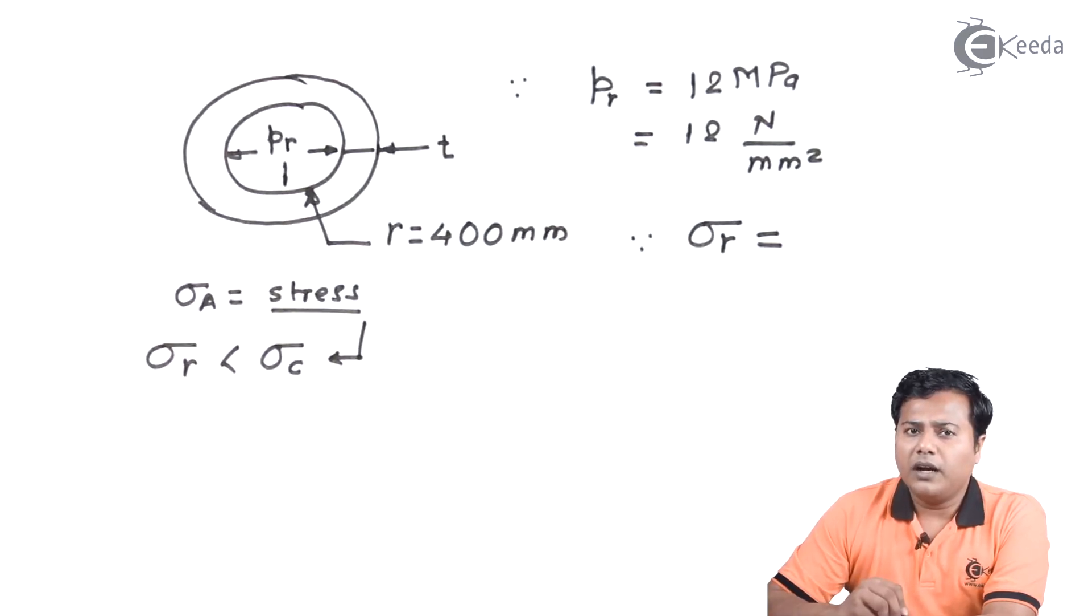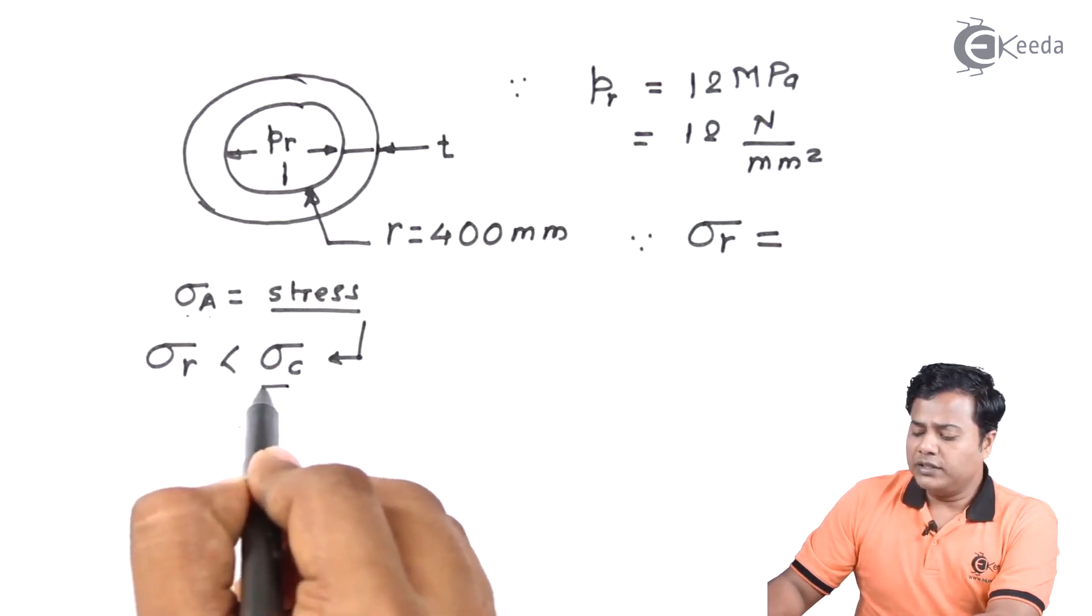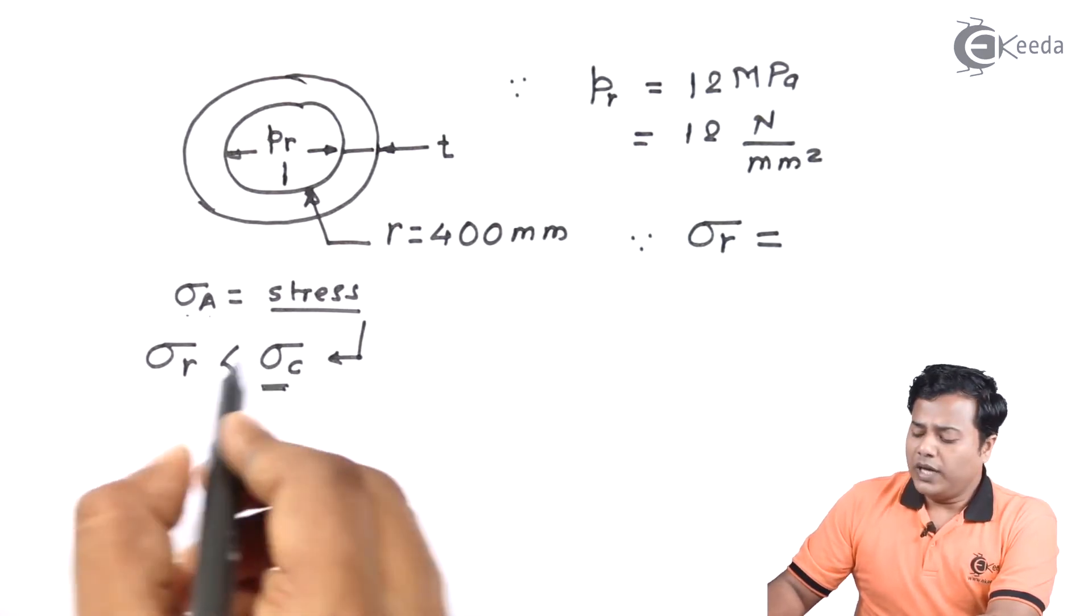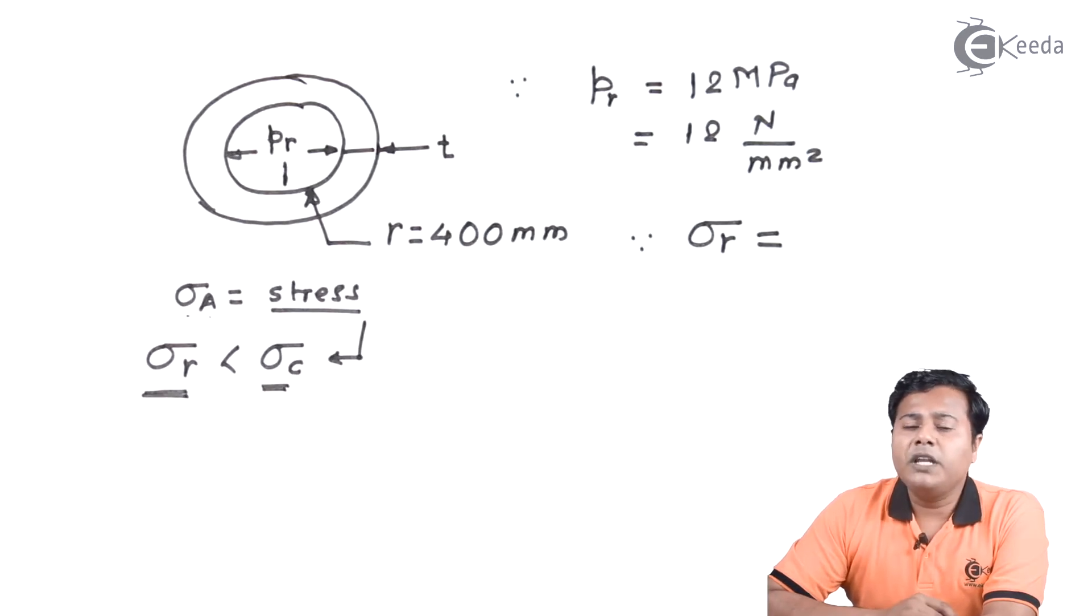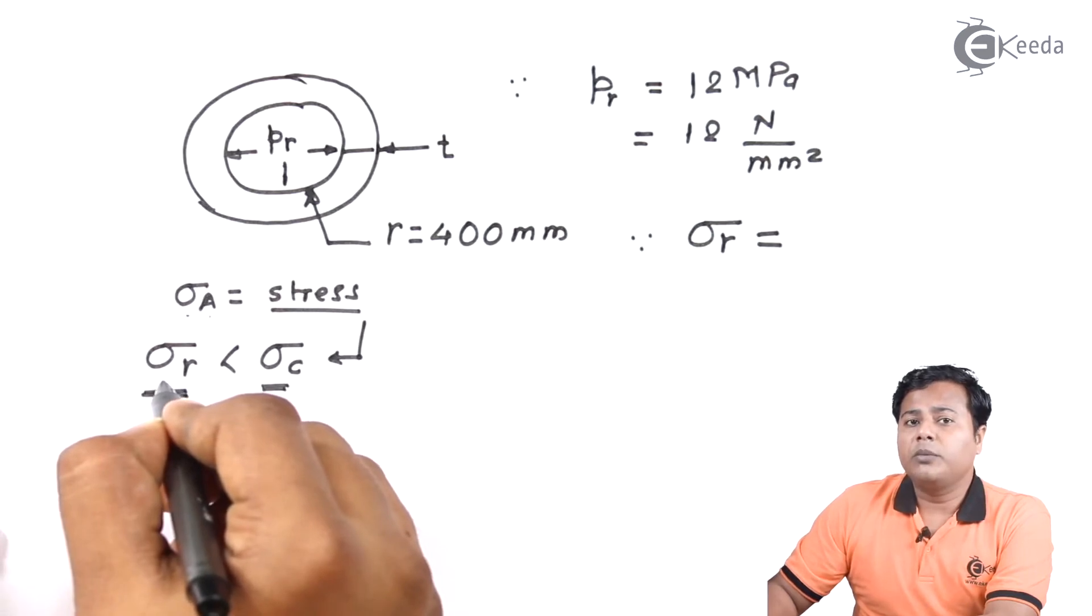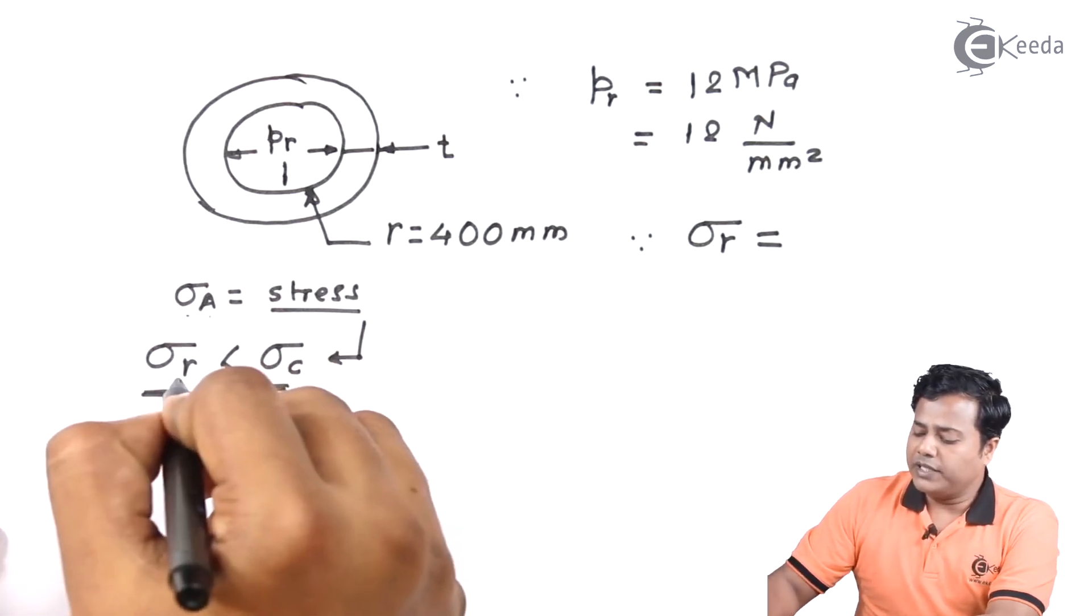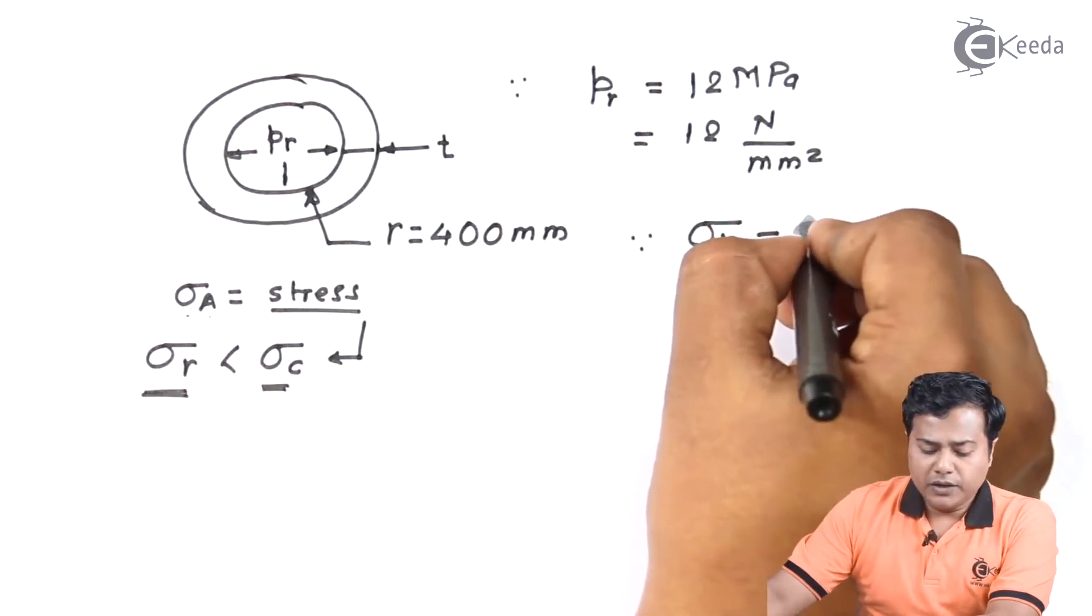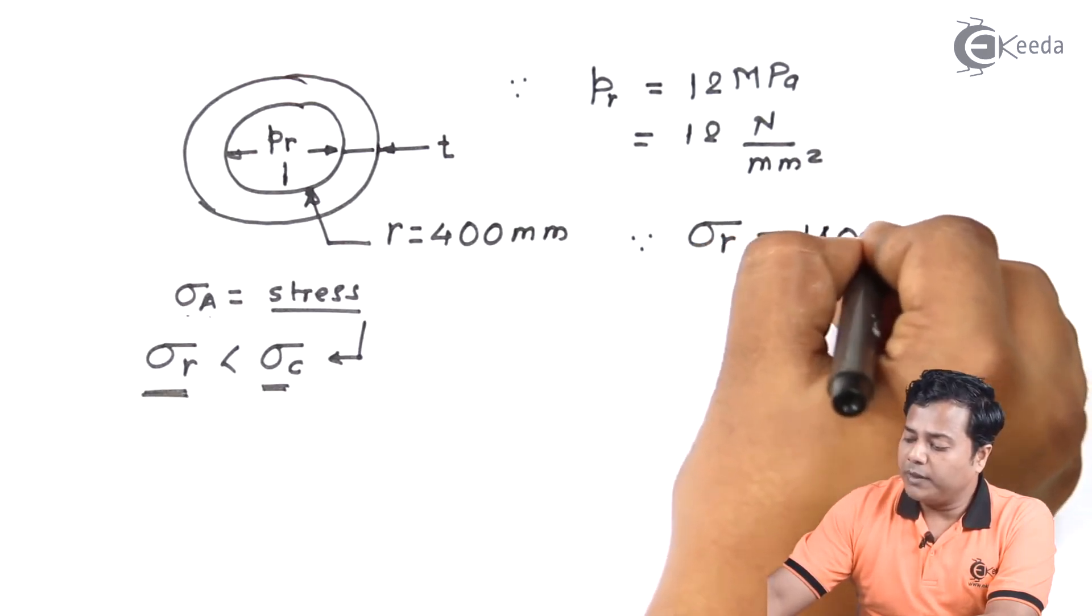I'll repeat this: if the allowable stress I consider for circumferential stress, I am under designing the given problem. So I will design it for the radial stress which is the minimum of all. So if I'm designing it for radial stress the given problem can sustain more. And that's why I am considering sigma radial. So sigma radial given is 110 newton per mm square.